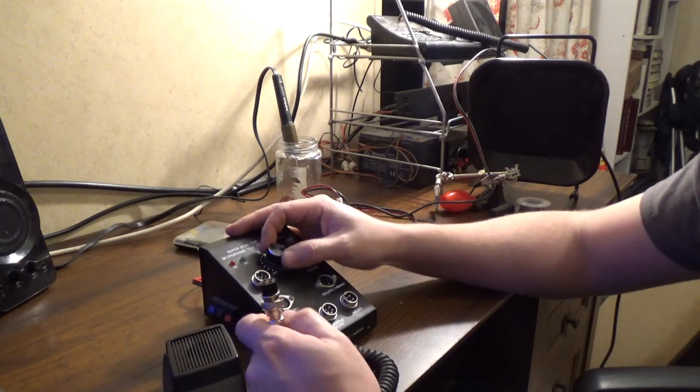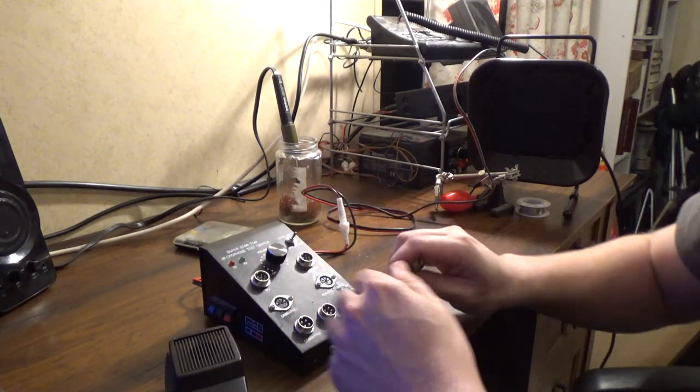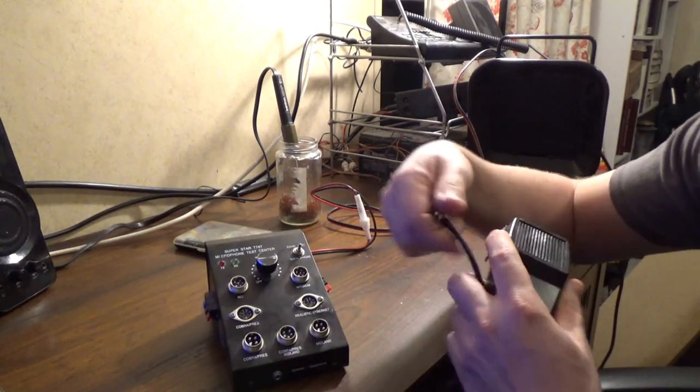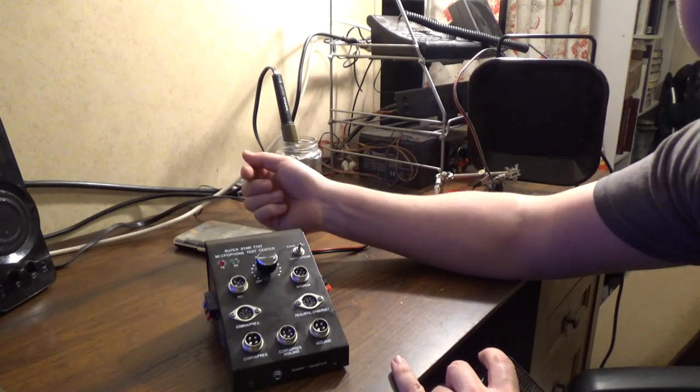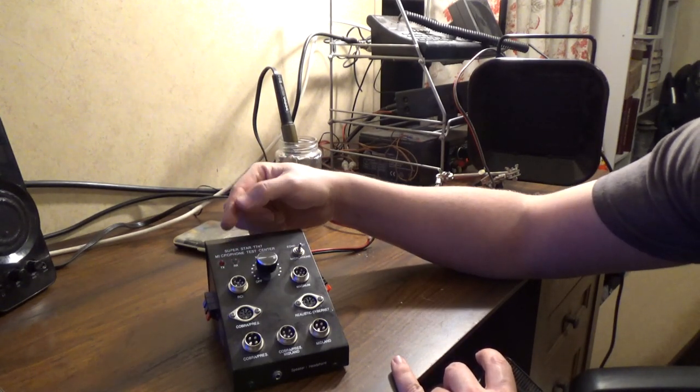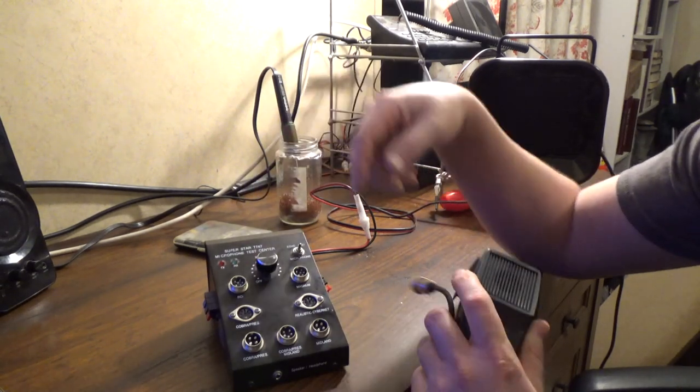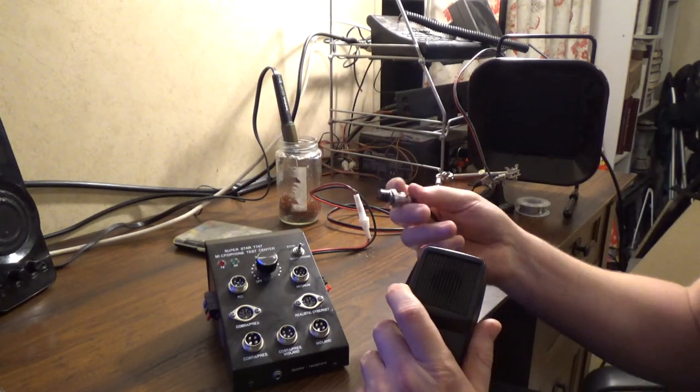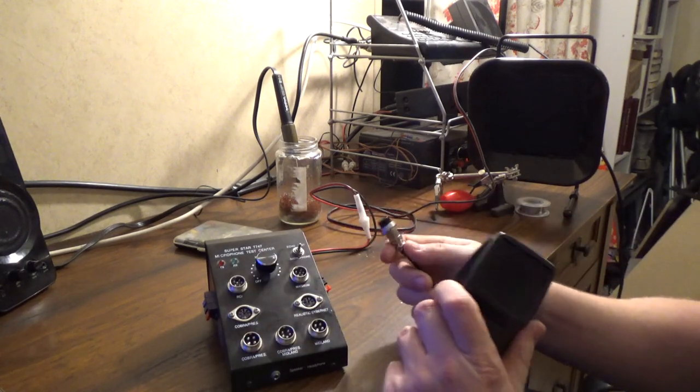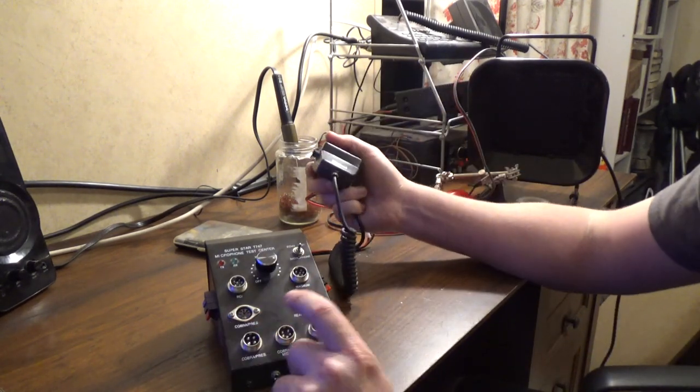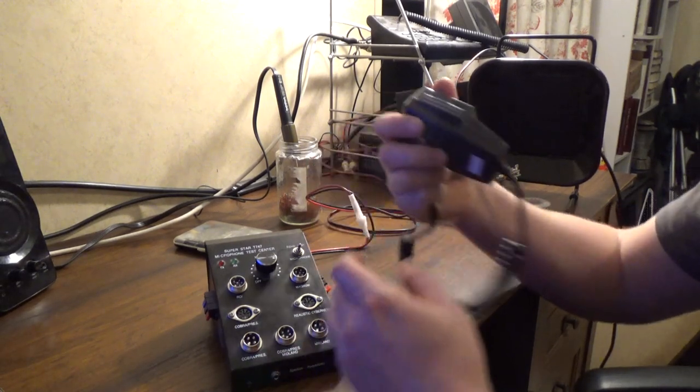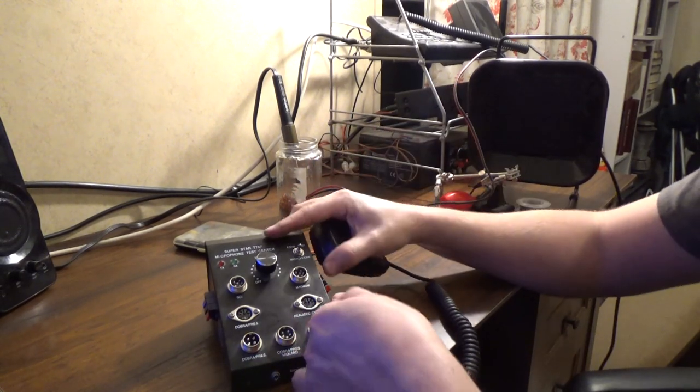Alright. So we've got our test station up here. So if we put it on... By the way, this is a Superstar T747 microphone tester. If I can find an Amazon link, I'll give you guys an affiliate link and put it in the description to buy this thing. But basically it's got all these different connectors for different microphones. So you can see we've got 4-pin Cobra slash President and 4-pin Midland.